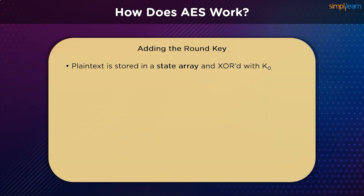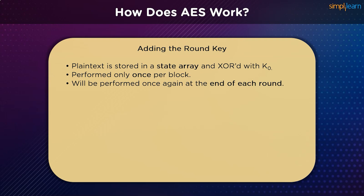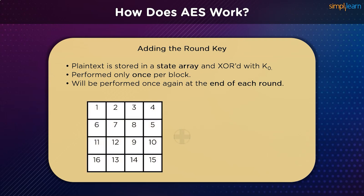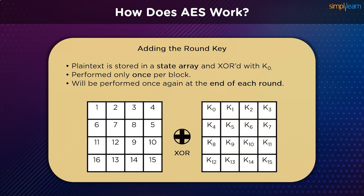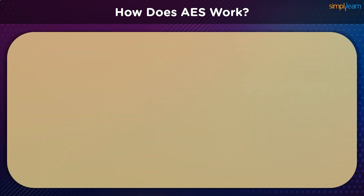In the first step, the plaintext is stored in a state array and XORed with K0, the first key in the expanded key set. This step is performed only once on a block, while being repeated at the end of each round. The state array is XORed with the key to get a new state array, which is then passed as input to the SubBytes process. In the second stage, we have byte substitution.